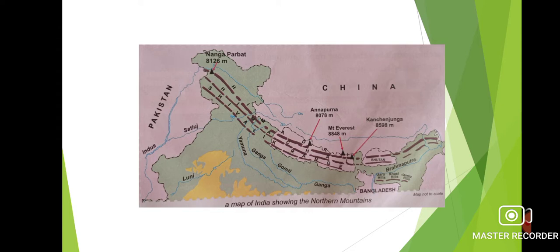A long row of mountains stretches from Jammu Kashmir in the north to Arunachal Pradesh in the east. Along its way, it crosses Himachal Pradesh, Uttarakhand, Sikkim and the northern part of West Bengal.